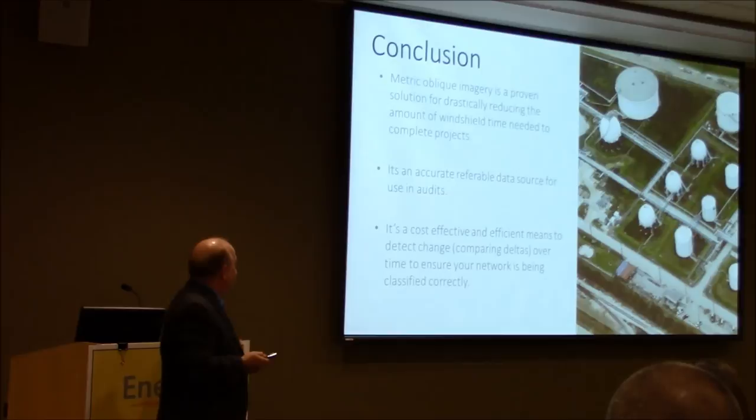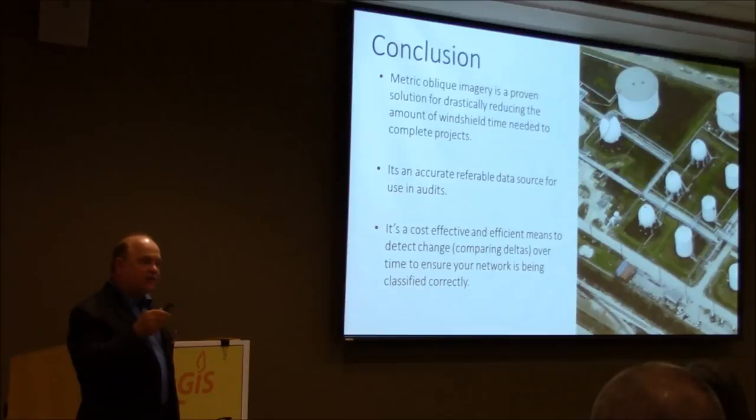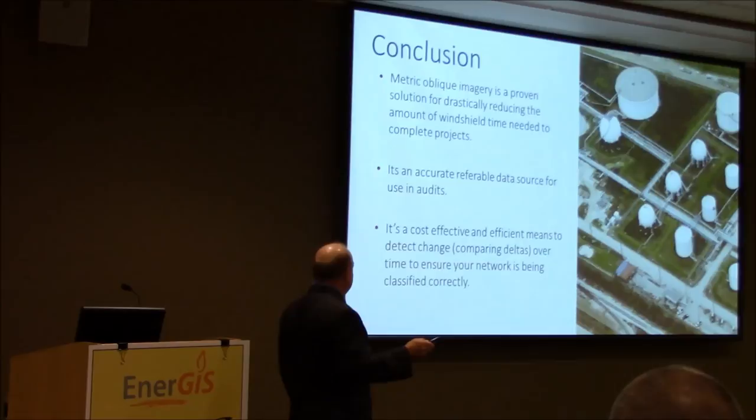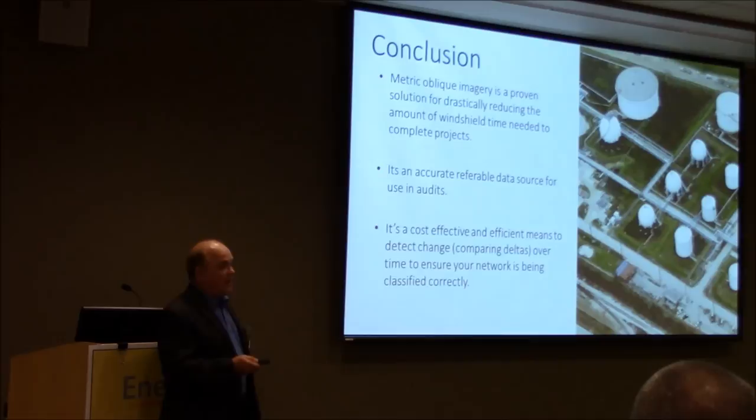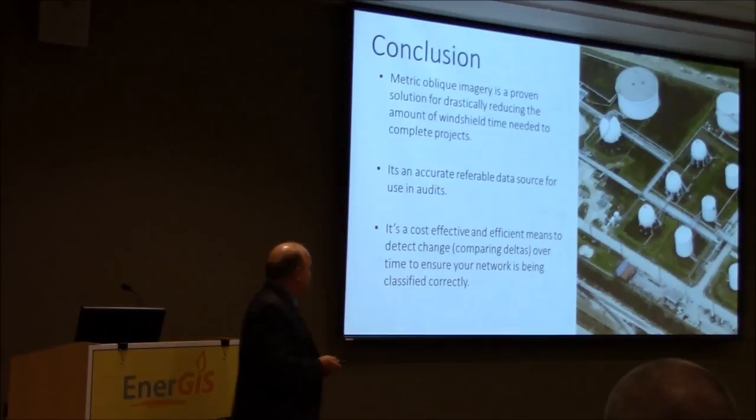With two minutes to spare, these are the points I really wanted to cover. Metric oblique has a place and an effective place in an HCA verification and determination conversation. You need something that is documentable, a referenceable piece of data that can be used in a defensive mode both internally and externally. And the last point is that it's a way of cost-effectively making determinations about change in and around your right-of-way. With that, I think I've just about exhausted time.